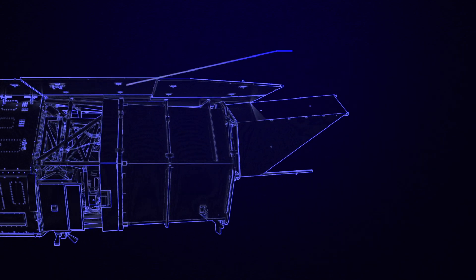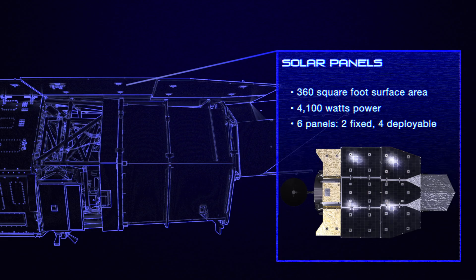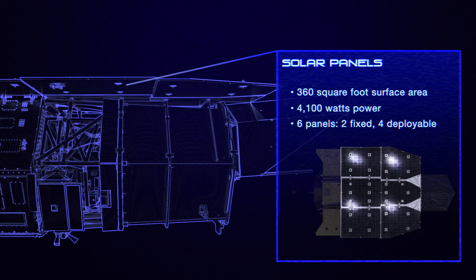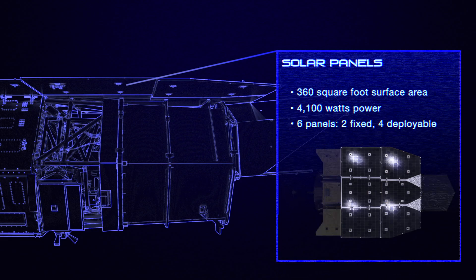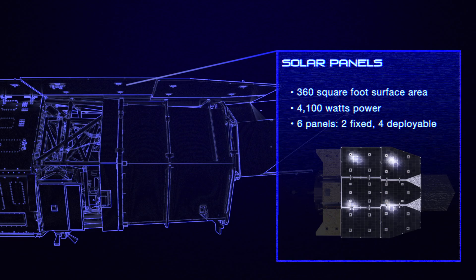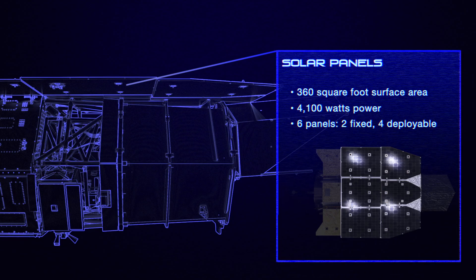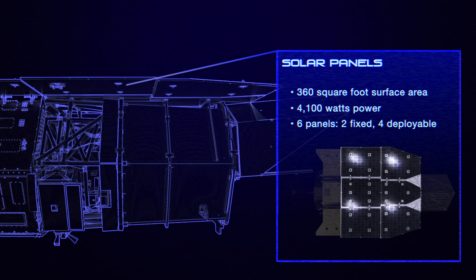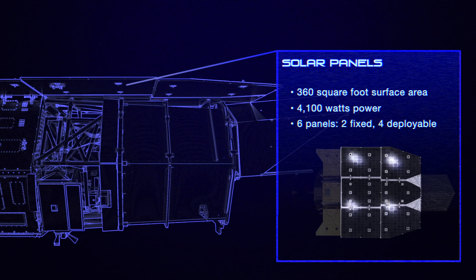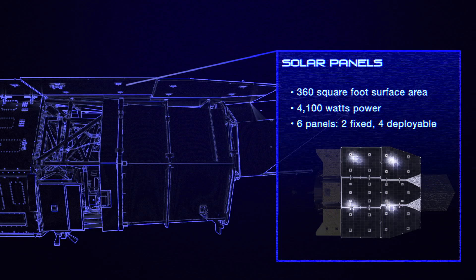The spacecraft's solar panels provide its power by converting sunlight into electricity. They also shade the spacecraft, helping to keep its instruments at their design temperatures. The solar panels will be able to provide 4,100 watts of power, enough to run two commercial microwave ovens.